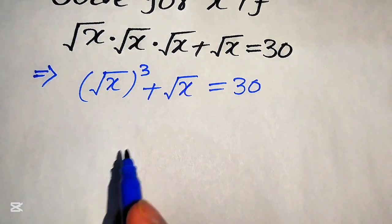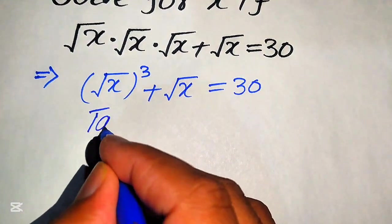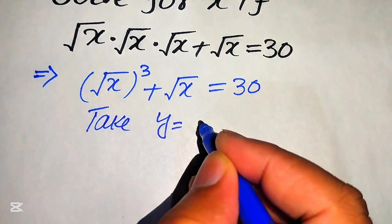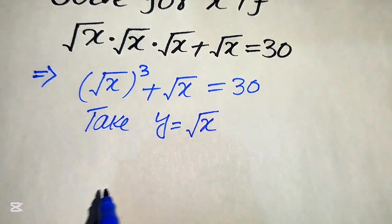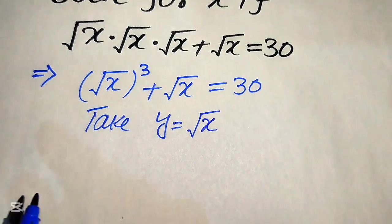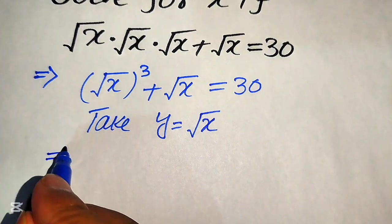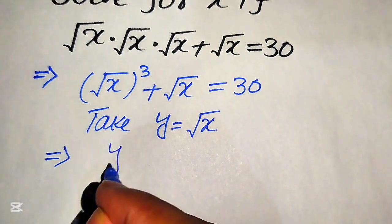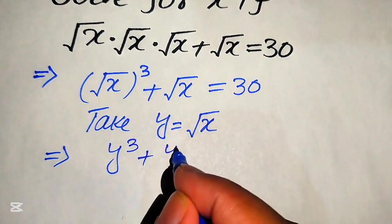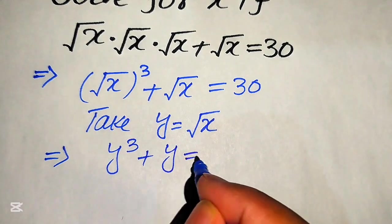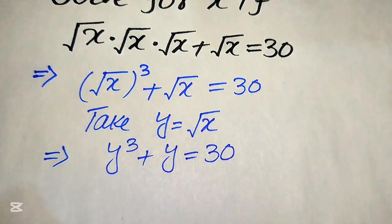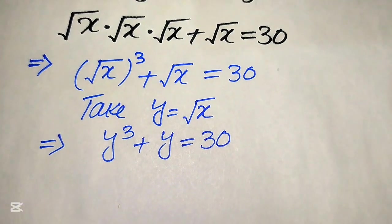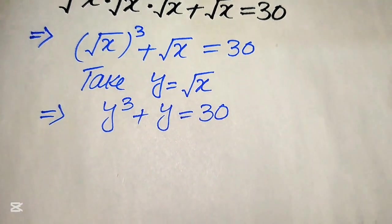Now we convert this radical equation by taking the substitution y = √x. When we substitute this value into our equation, it becomes y³ + y = 30. This is a cubic equation in the variable y.